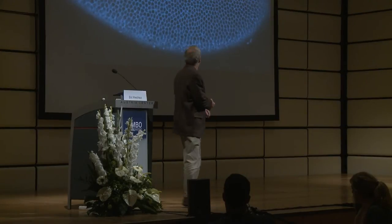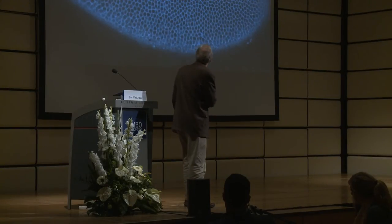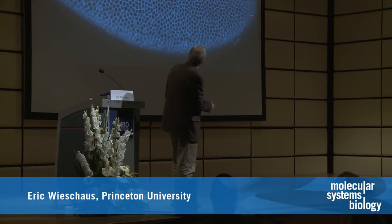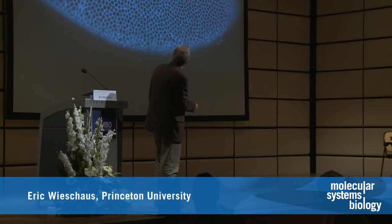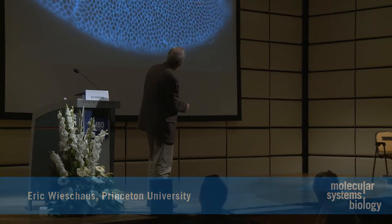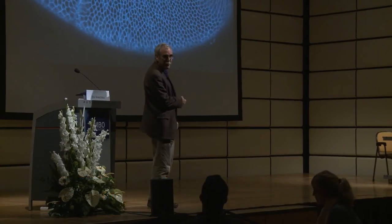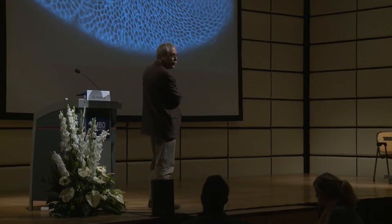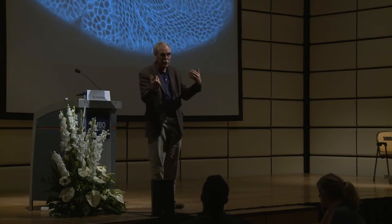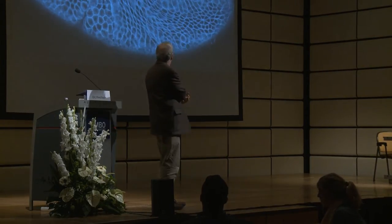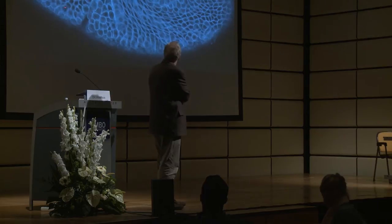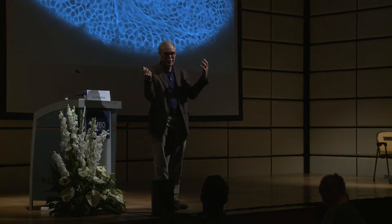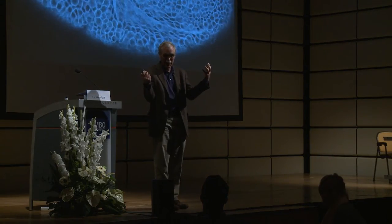This is a Drosophila embryo. There are about a hundred cells in this direction. We can see all the cells look initially pretty much the same. This is a process of gastrulation. And what you can see in the course of this movie is that things get more and more complex.